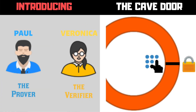As you think about Waldo, let's discuss another analogy: the cave door. For this example, we'll introduce two characters, Paul the prover, and Veronica the verifier. Imagine there is a circular cave. This particular cave has one entrance and exit, and it happens to be at the front. At the back of the circular cave, there is a door. This door has a keypad that requires a passcode to be entered to open.